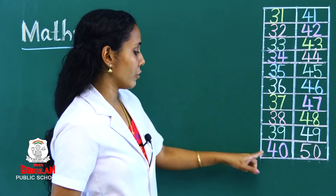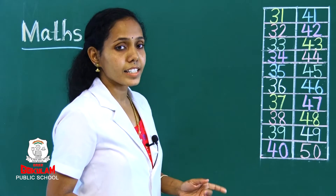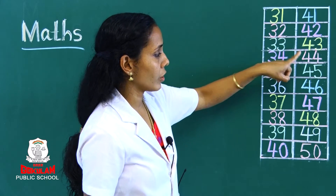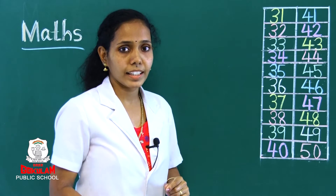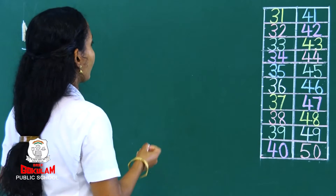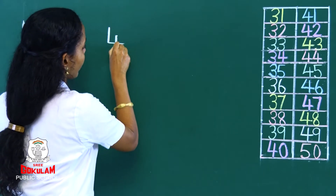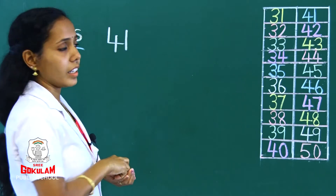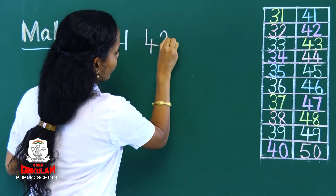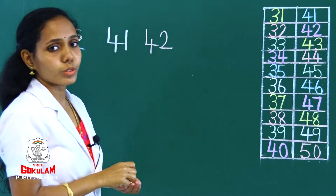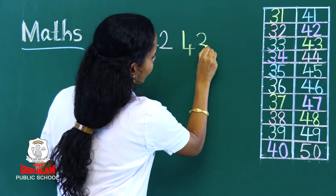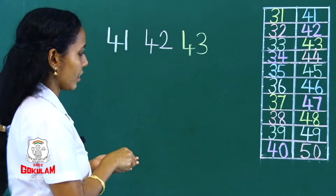Now we will write the next four numbers: 41, 42, 43, 44. Now we will write in the next four numbers: 41, 42, 43.